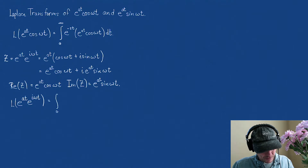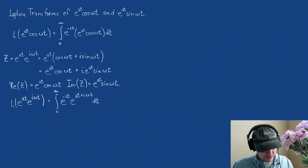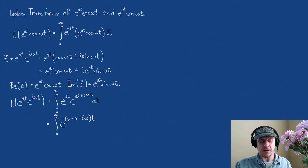So this becomes the integral from zero to infinity of e to the minus st times e to the at plus i omega t dt. Let's combine our exponents — we can just add those up. So I have the integral from zero to infinity of e to the minus, factoring out a negative, s minus a minus i omega, times t dt.